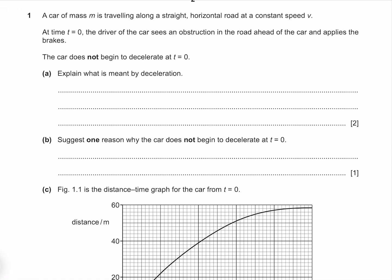A car of mass M is traveling along a straight horizontal road at a constant speed v. At time equals 0, the driver of the car sees an obstruction in the road ahead of the car and applies the brakes. The car does not begin to decelerate at t equals 0.